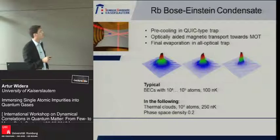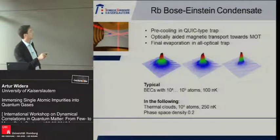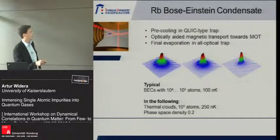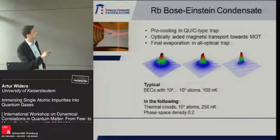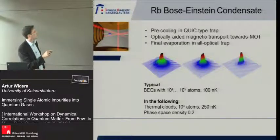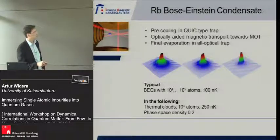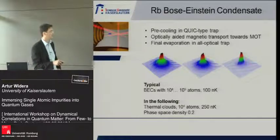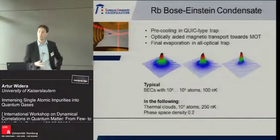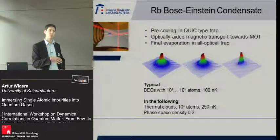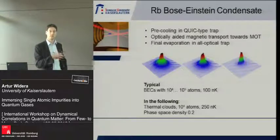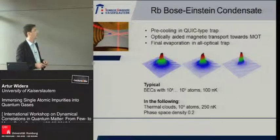For the Bose-Einstein condensate, in our QUIC trap we can create BECs of up to 10⁵ rubidium atoms at temperatures around 100 nanokelvin. For our purpose, however, we pre-cool the atoms and use thermal clouds just above the condensation threshold at a phase-space density of 0.2 — not because we couldn't make a BEC, but because for the first experiments we want to study pure classical cooling of single atoms without quantum effects.